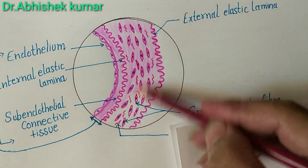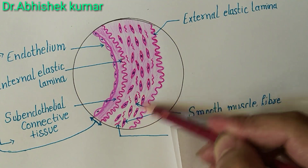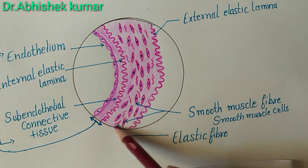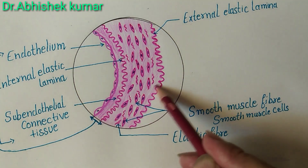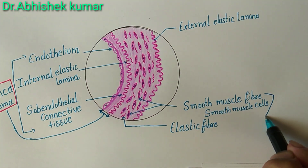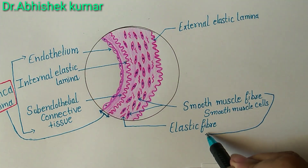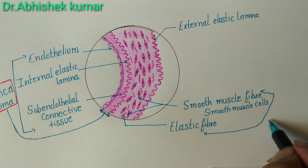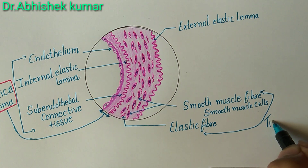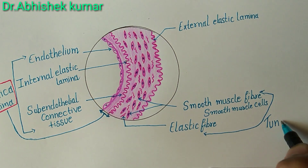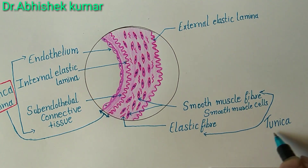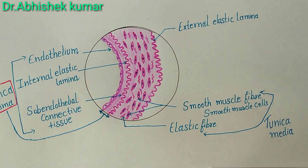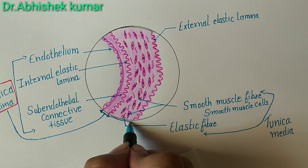So this layer — basically smooth muscle fibers or smooth muscle cells, elastic fibers, and collagen fibers together make the second layer of muscular artery, that is tunica media. Here is our tunica media layer.